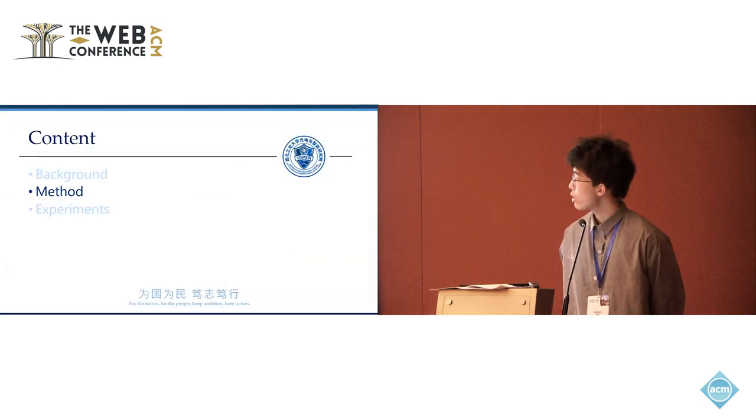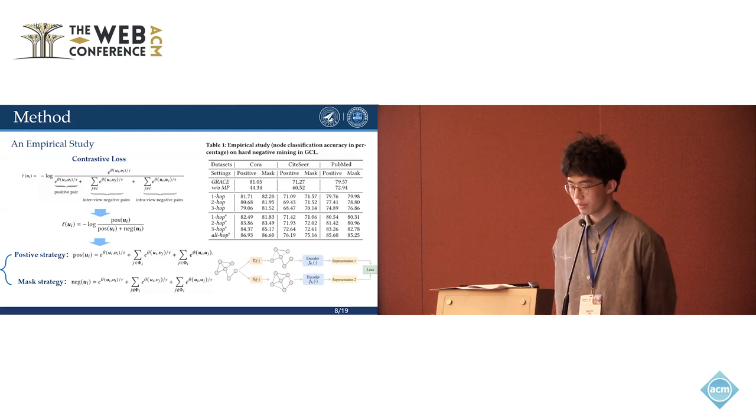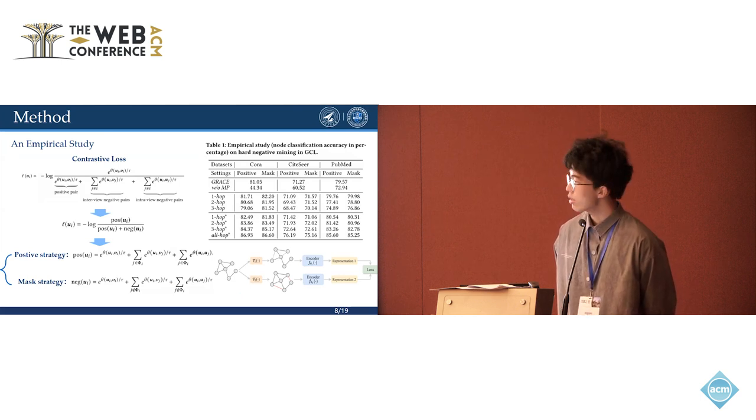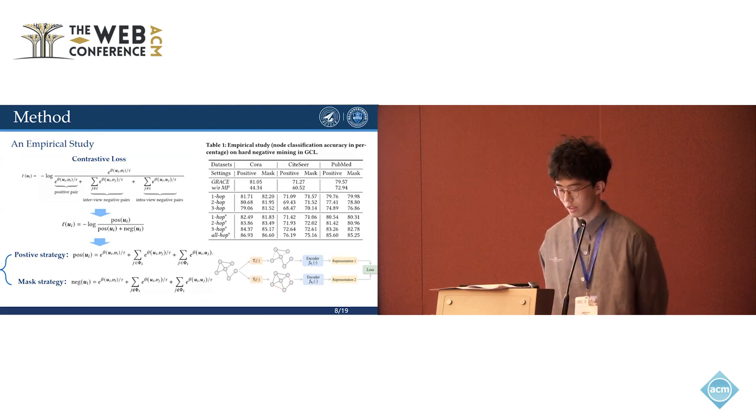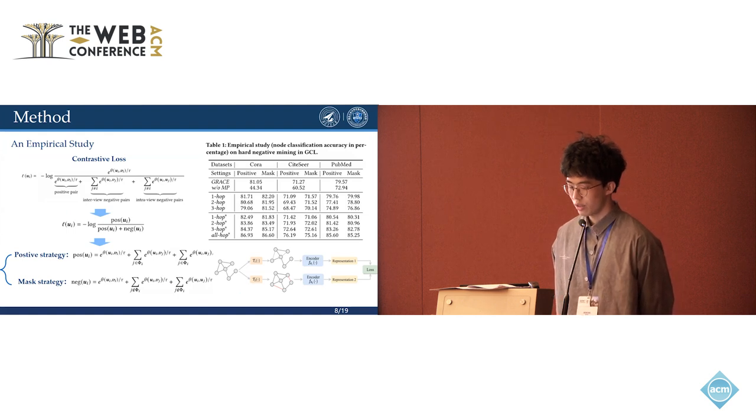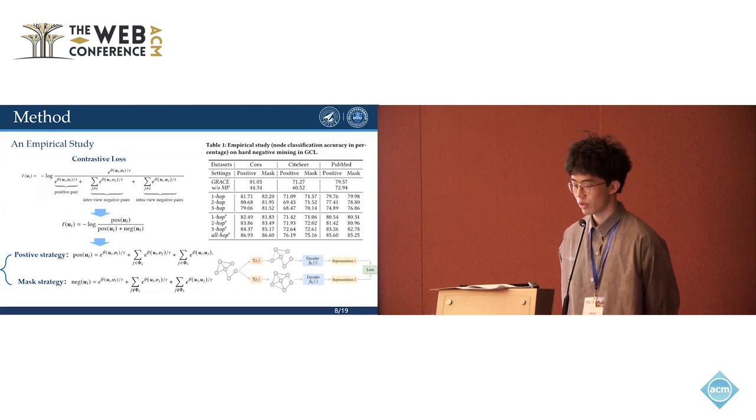Next, we introduce our method. We start from an empirical study. We show that more expansive and adaptive hard-negative mining is promising for enhancing node-level graph contrastive learning, especially if the neighbors to an anchor are directly used as positive samples to this anchor.